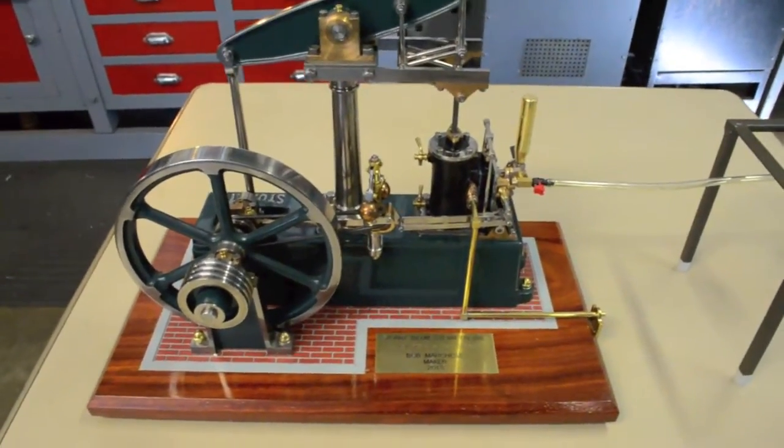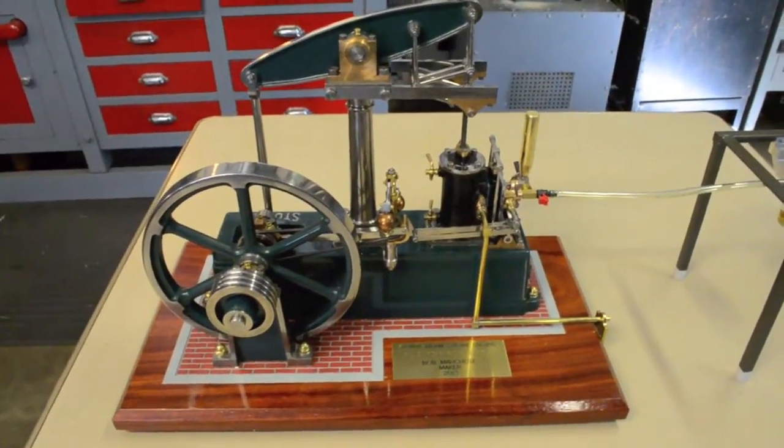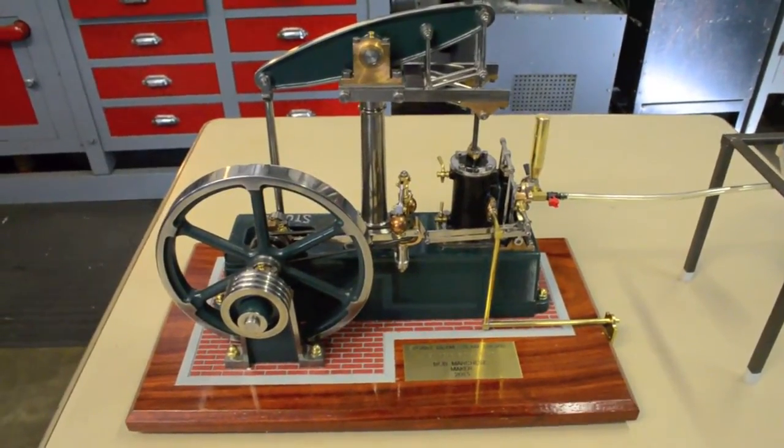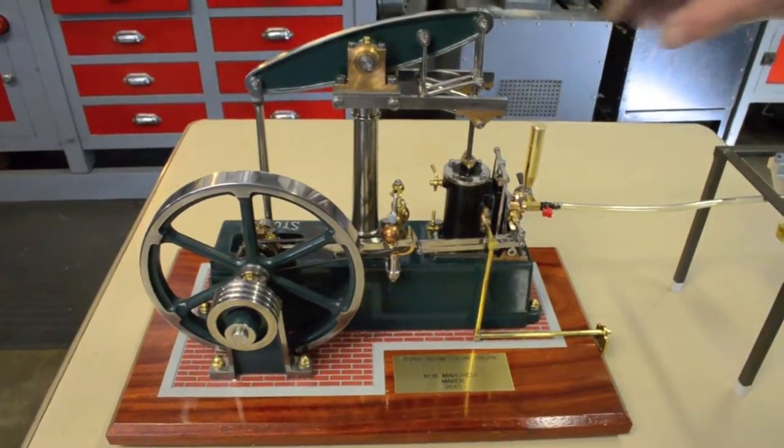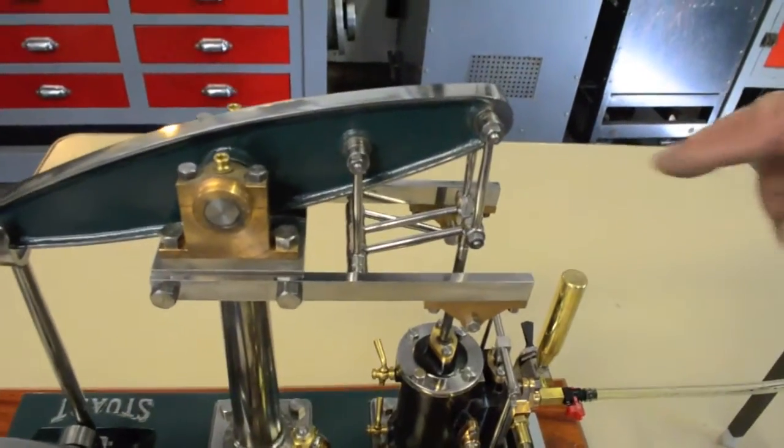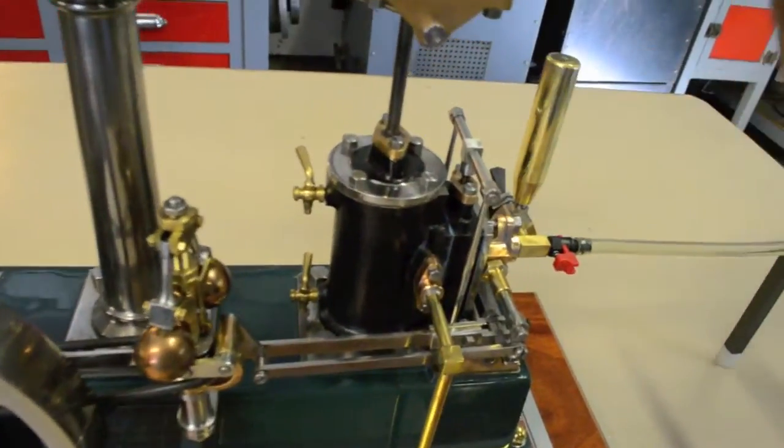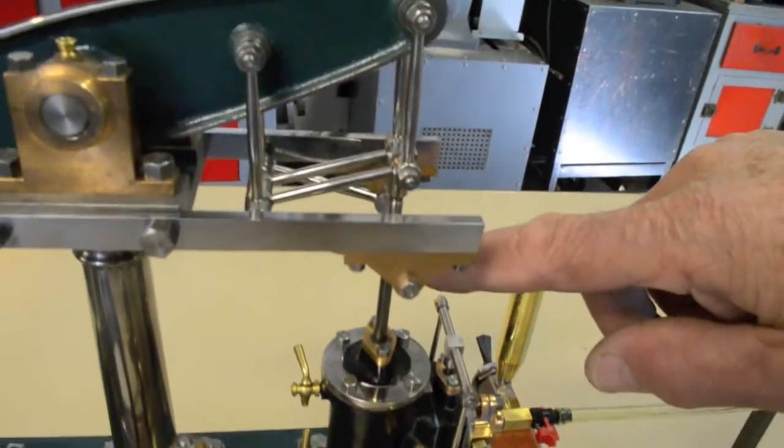I picked this engine because it demonstrates movement that you don't see in other engines, most specifically the Watts linkage, which is this series of links here. Their purpose is to maintain vertical positioning of the connecting rod while it's trying to pump the beam which is rotating about this axis.